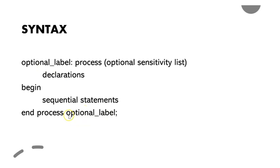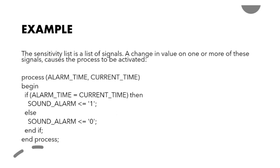Then 'end process' with an optional label — if you put a label at the start, you have to put the same label at the end. The label is optional; you don't always need it. This is the syntax of a process statement: optional label, 'process' keyword, sensitivity list, declarations, 'begin', statements, then 'end process' label.